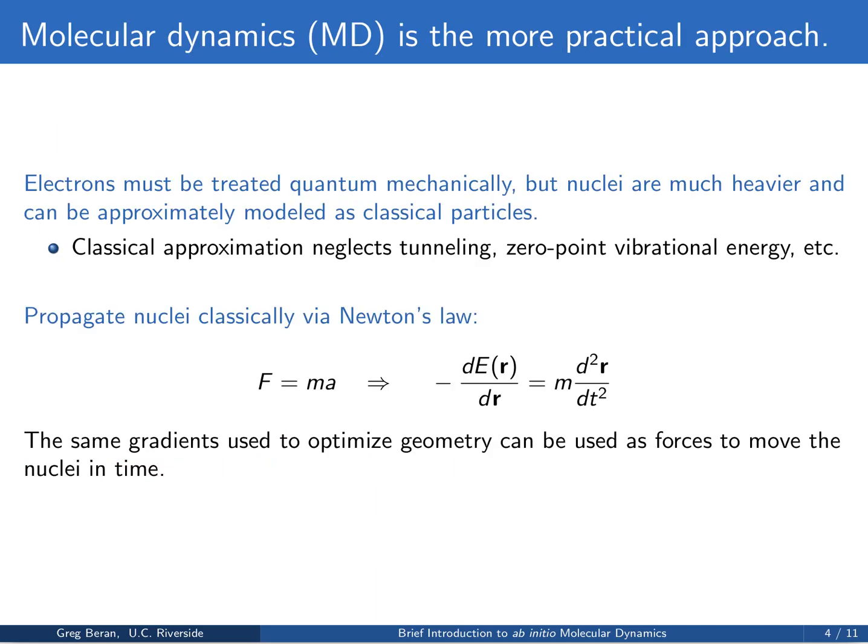Molecular dynamics is the far more common and more practical approach. The idea behind ab initio molecular dynamics is that the electrons have to be treated quantum mechanically because they're very light particles and they really do have strong quantum mechanical behaviors. But nuclei are much heavier — something like a thousand times heavier — and they can actually be approximately modeled pretty well as classical particles. Now this does neglect things like tunneling and zero-point vibrational energy. The biggest errors will likely occur for hydrogen atoms because those are the lightest nuclei and therefore undergo the most tunneling.